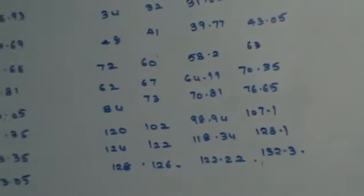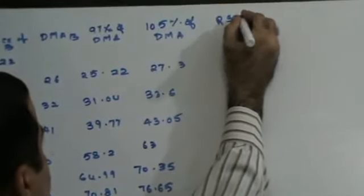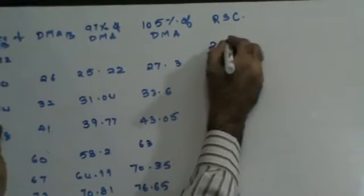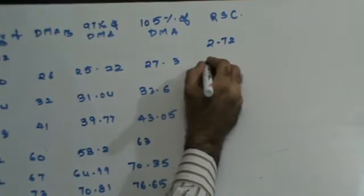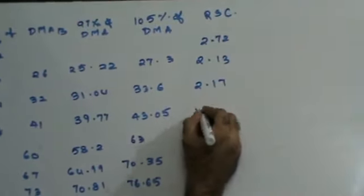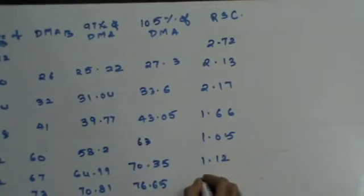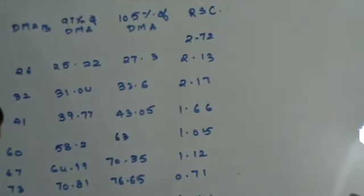Now let's find out the relative strength comparison for Rule 2. RSC is price of A divided by price of B. The values are: 60/22 = 2.72, 64/30 = 2.13, then 2.17, 1.66, 1.05, 1.12, 0.71, 0.41, 0.48, and 0.52.